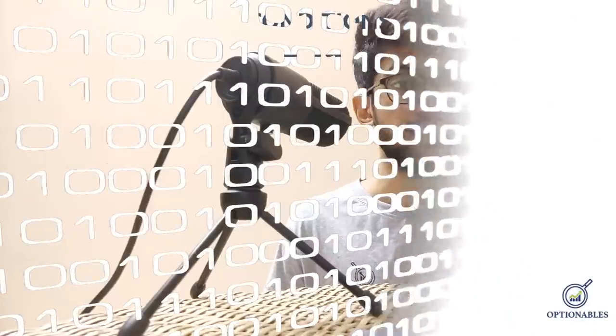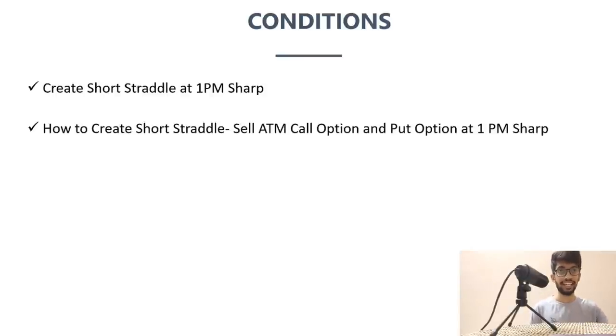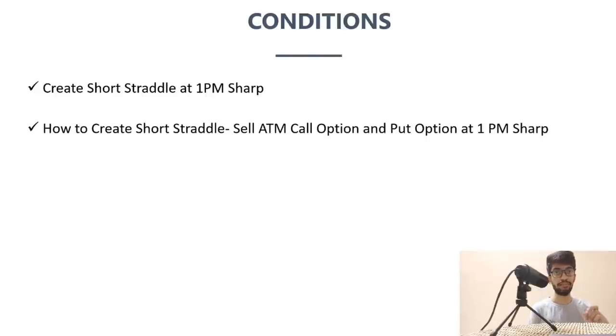Welcome to the third session — the core of the strategy. I'm going to tell you everything related to executing a short straddle, how to keep a stop loss, and show you all the data. The first condition: you enter the strategy at 1 pm sharp. You create a short straddle at 1 pm sharp by shorting at-the-money calls and puts on BankNifty — whatever is at-the-money at 1 pm.